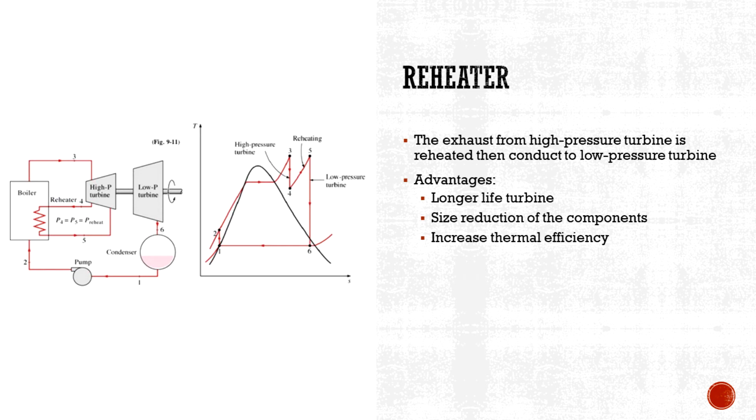What is a reheater? A reheater is basically used to reheat the exhaust from high-pressure turbine before it is conducted to low-pressure turbine. By reheating the steam at lower pressure, the moisture content of steam inside the turbine can be lowered with high temperature.